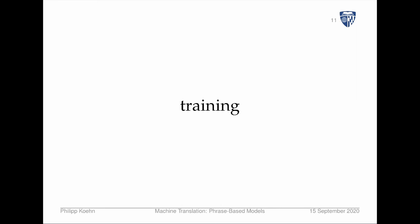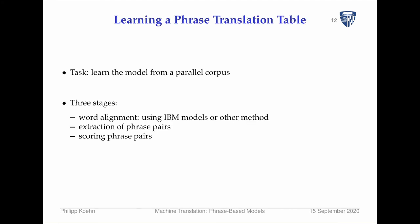Where do we get all these things from? Last time we used a very sophisticated EM algorithm. Here we mostly piggyback on that work. The task is to learn a model from a parallel corpus. There are three stages: word alignment — using IBM models or other methods — then extracting phrase pairs, and then scoring them.